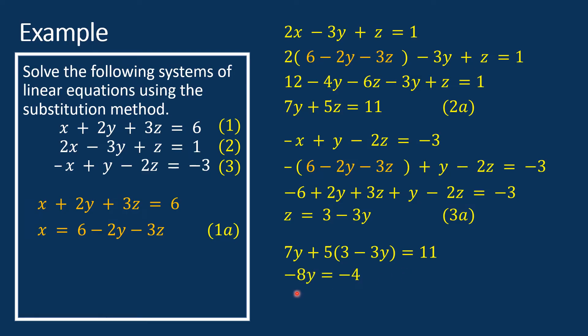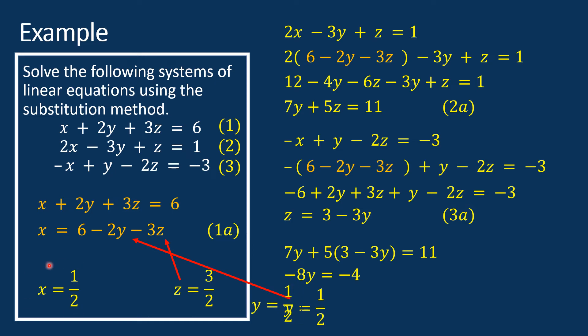Substituting equation 3a into equation 2a, we get negative 8y equals negative 4, therefore y equals 1/2. Substituting y equals 1/2 into equation 3a, we get z equals 3/2. Substituting y equals 1/2 and z equals 3/2 into equation 1a, we get x equals 1/2. This is the solution to this system of equations. The substitution method is generally faster and easier than the elimination method.